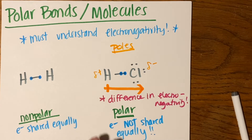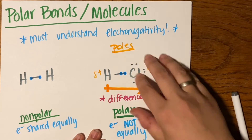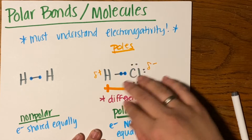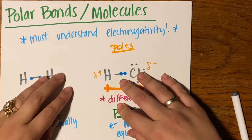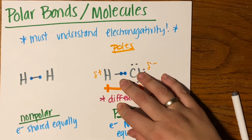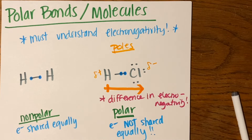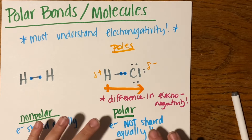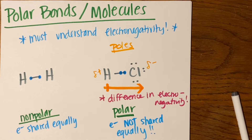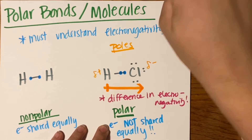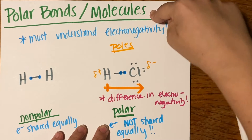Eventually, polar molecules will attract other polar molecules, and non-polar molecules will be attracted to other non-polar molecules. This becomes very important in all kinds of chemistry, especially biochemistry - the chemistry that happens within our body. Polar versus non-polar is very, very important.